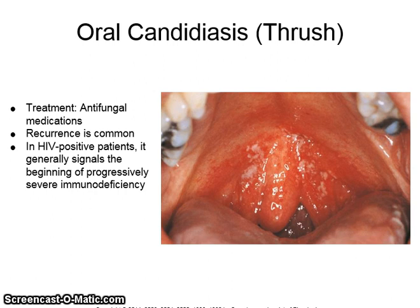Oral candidiasis, also known as thrush, can be seen in the image on the right. Treatment includes antifungal medications, and recurrence is common. In HIV patients, it generally signals the beginning of progressively severe immunodeficiency.